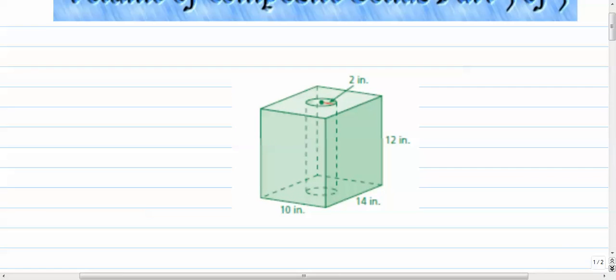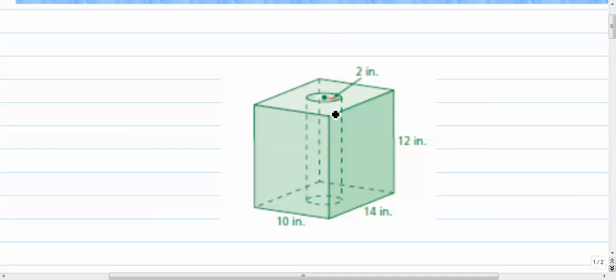If we zoom in on this a little bit, we can see that even though it's a little bit grainy, you can hopefully see that we have a rectangular prism, sort of like a tissue box thing, and then this cylinder inside is removed from the rectangular prism. It's actually taken out of the rectangular prism.